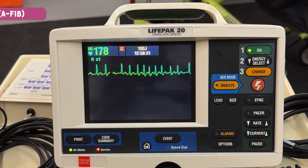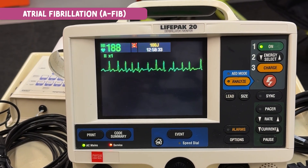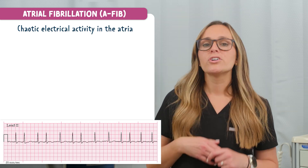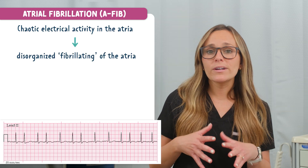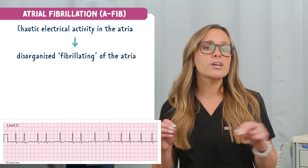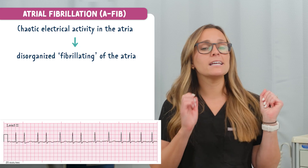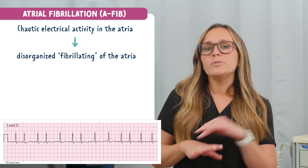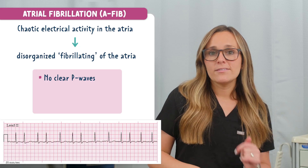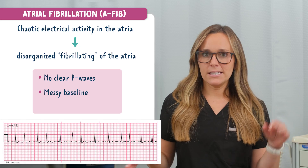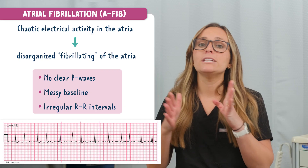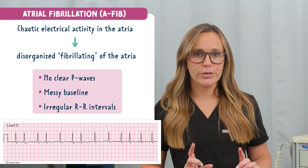If you guessed atrial fibrillation or AFib, you're right. AFib is caused by chaotic electrical activity in the atria, causing disorganized fibrillating of the atria, which is why you'll see the classic irregularly irregular rhythm. In AFib, you won't see any clear P waves and the baseline looks messy. The R to R intervals are inconsistent and irregular, which is a major clue.